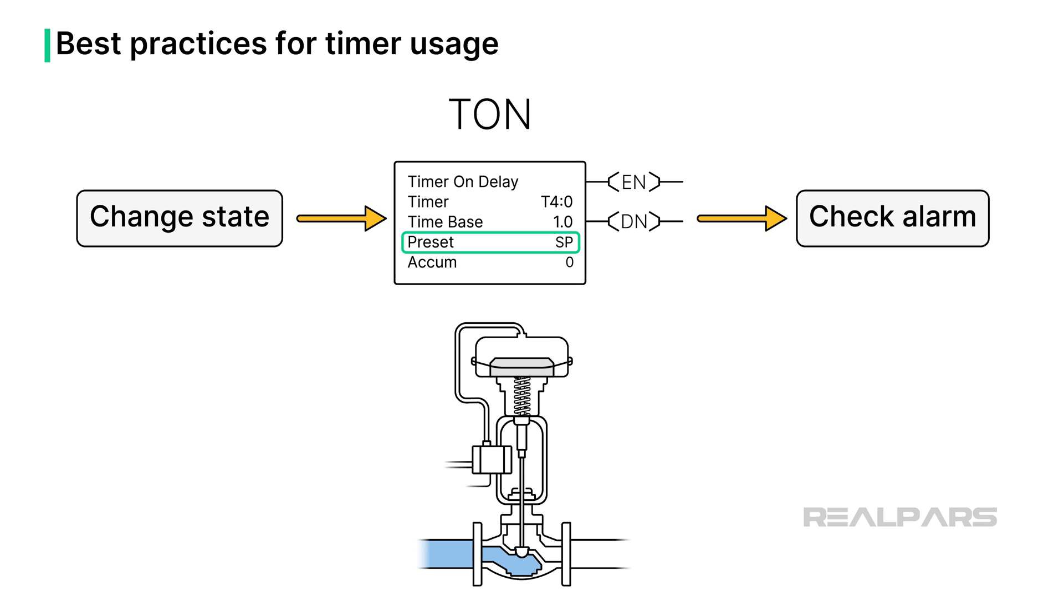Setting appropriate timer presets is very important. If I'm trying to delay the evaluation of a valve position alarm when a change of state is requested, I would want to set the timer to a reasonable value, such as 3 seconds. This allows enough time for the valve to change state without an excessive delay, before an alarm condition is checked.